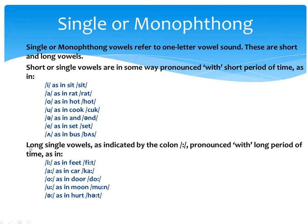Long vowels, which are indicated by a colon symbol, are pronounced with a longer period of time. For example: the vowel iː as in 'feed' versus the short I as in 'sit'; the vowel æ as in 'rat' and ɑː as in 'car'; ɒ as in 'hot' and ɔː as in 'dough'; ʊ as in 'cook' and uː as in 'moon'; ə as in 'ant' and ɜː as in 'hurt'. These are called long single vowels because they require a longer period of time in pronunciation.